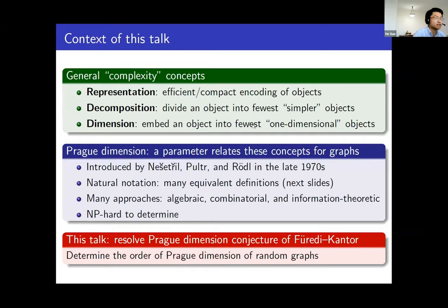Because proc dimension is a dimension, it also means we try to embed an object into a minimal number of one-dimensional objects. Those are some rough ideas about proc dimension — it is a parameter that relates to all three of these concepts, and it was introduced by Nostriel, Porter, and Rodo in the late 1970s.